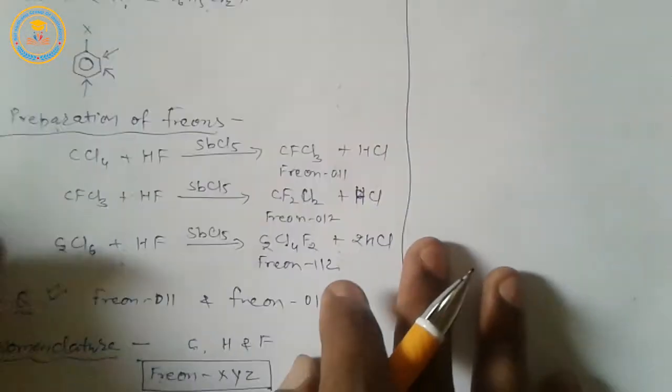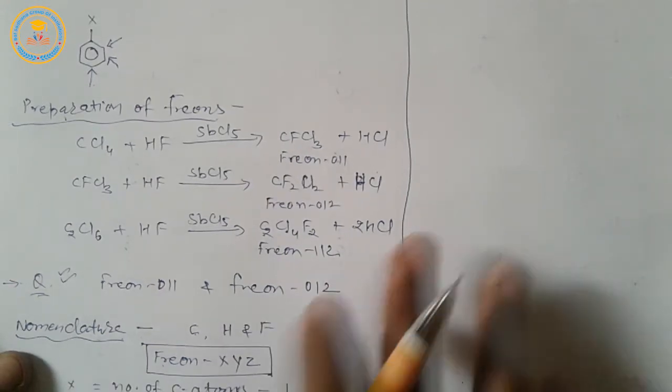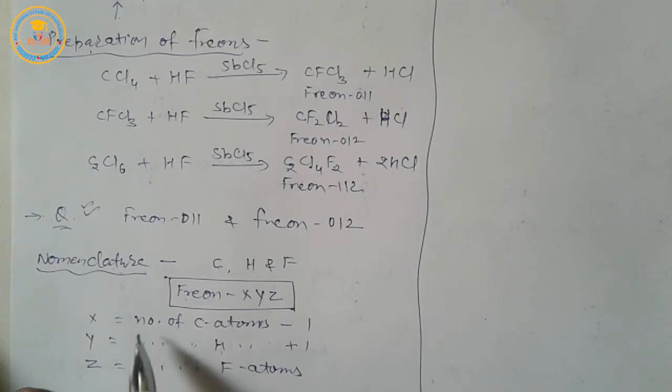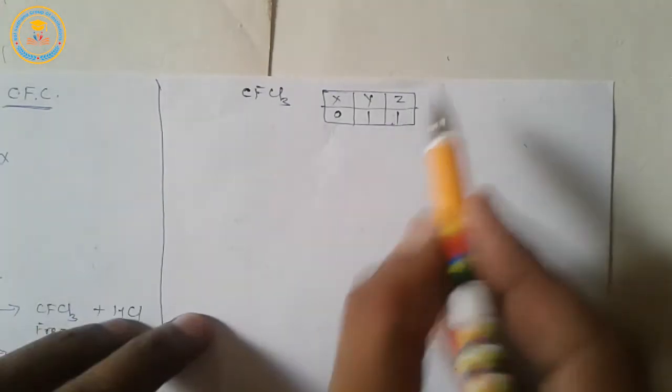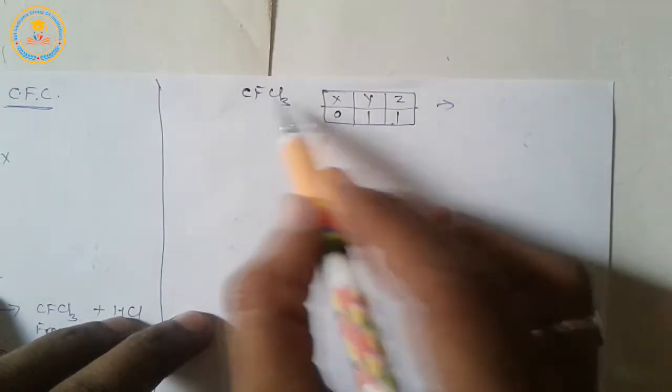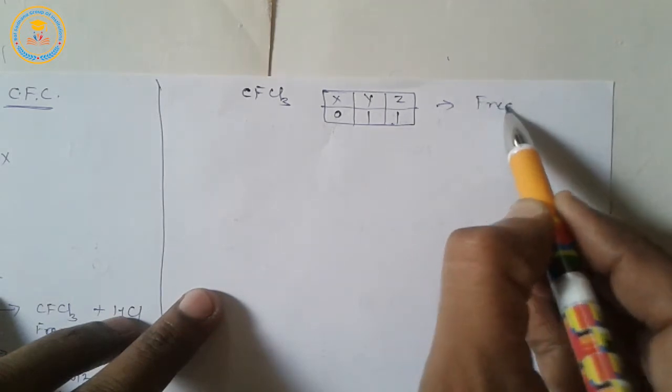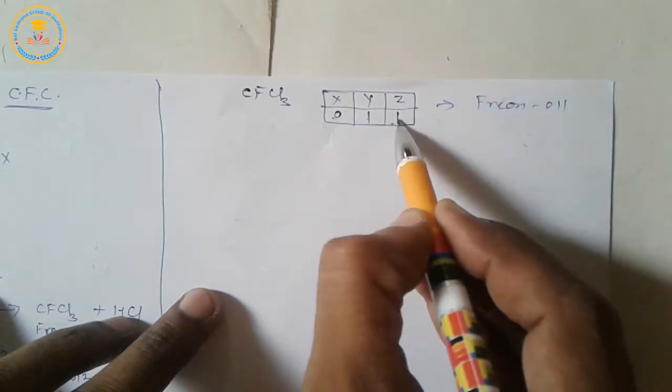We put the value of carbon, fluorine, and chlorine in this formula. Number of carbon atoms in CFCl3 is 1. 1 minus 1 equals 0. Number of hydrogen atoms is 0, so 0 plus 1 equals 1. Y equals 1. And Z equals number of fluorine atoms in CFCl3, which is 1. So nomenclature of CFCl3 is Freon 011.